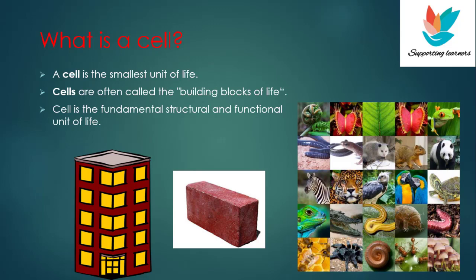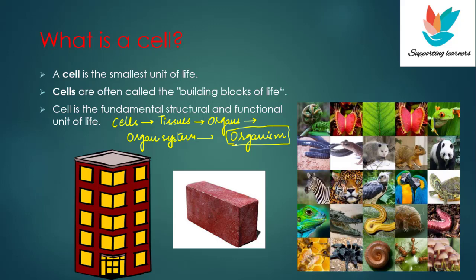Now what do we mean by this? In the body of living organisms, cells group together to form tissues. Tissues group together to form organs. Organs group together to form organ systems. And organ systems combine to form a whole organism. So in the living organism the smallest unit is the cell — the fundamental structural unit. This cell performs all the functions that are necessary for the living organism, so cell is also known as the functional unit of life.